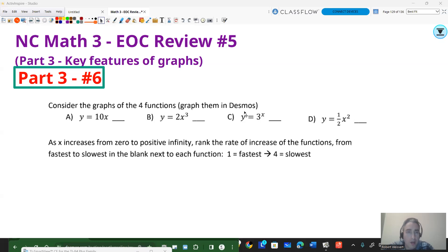One more graph here. We're reaching the finish line. Let's knock it out. So consider the graphs, the four functions, graph them in Desmos. I'm not going to read them for you, but you can go ahead and key them in while I'm reading the question. As x increases from 0 to positive infinity, rank the rate of increase of the functions from fastest to slowest in the blank next to each function. So fastest being the number 1, 4 being the slowest. So pause the video and key those in.